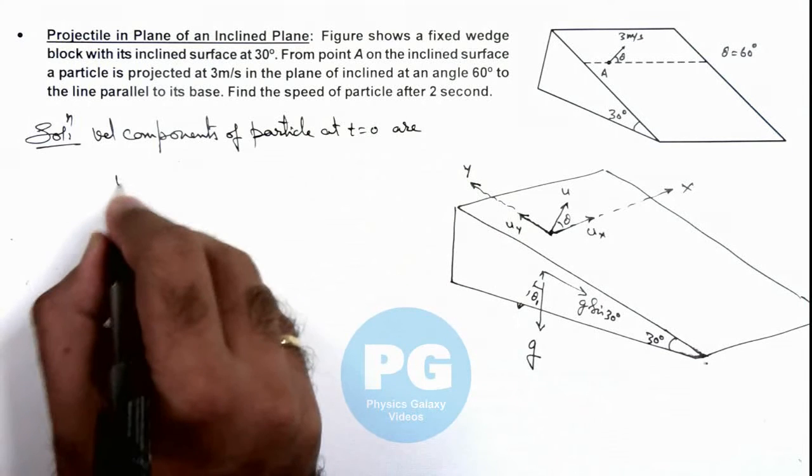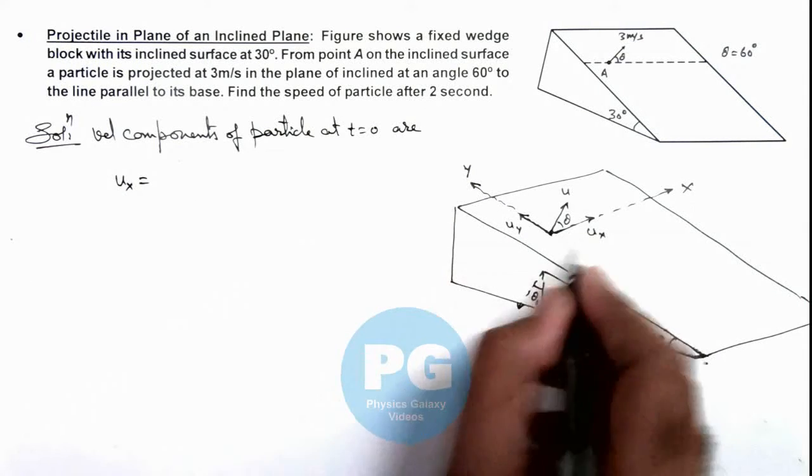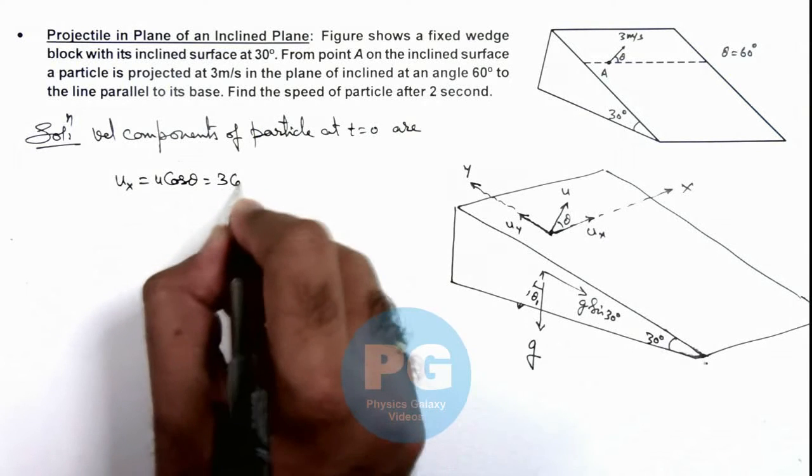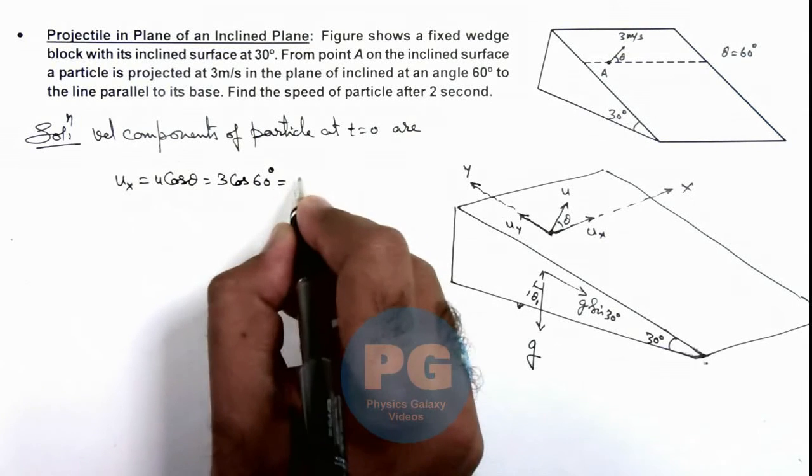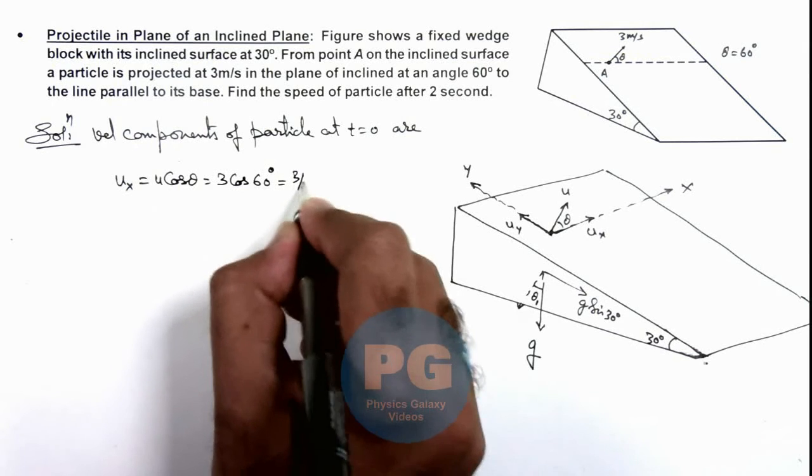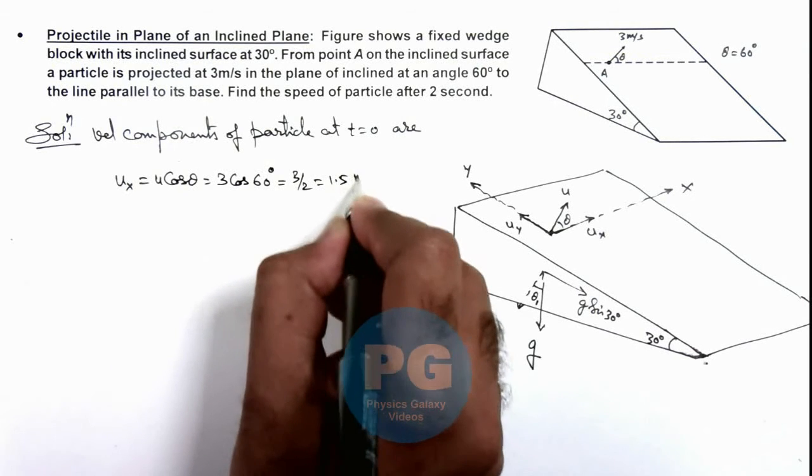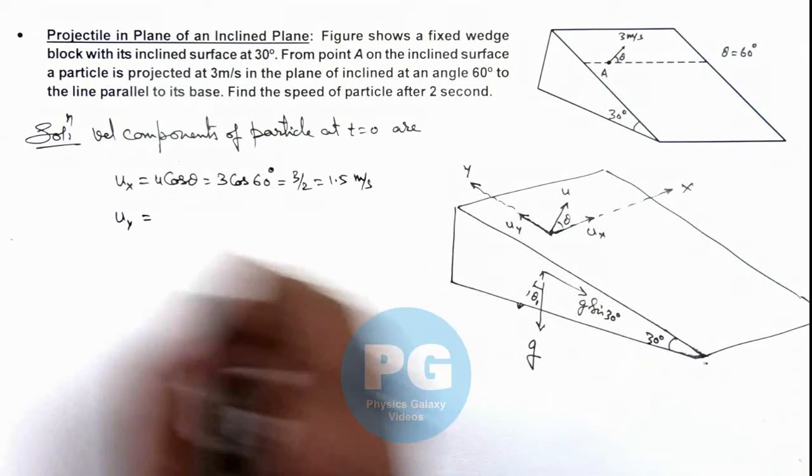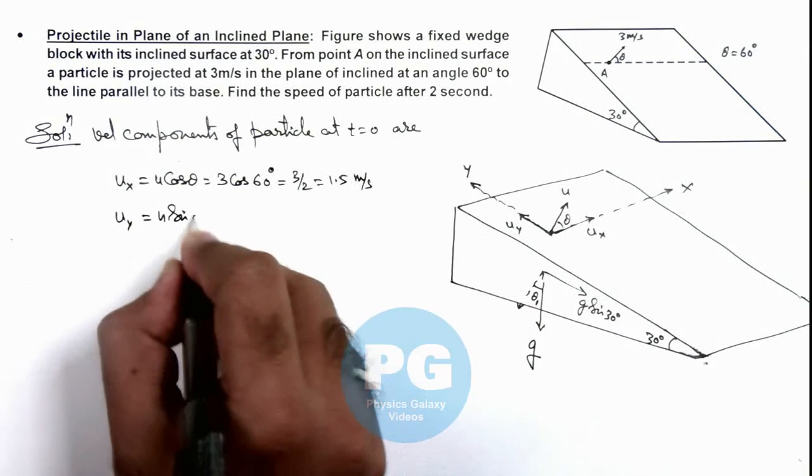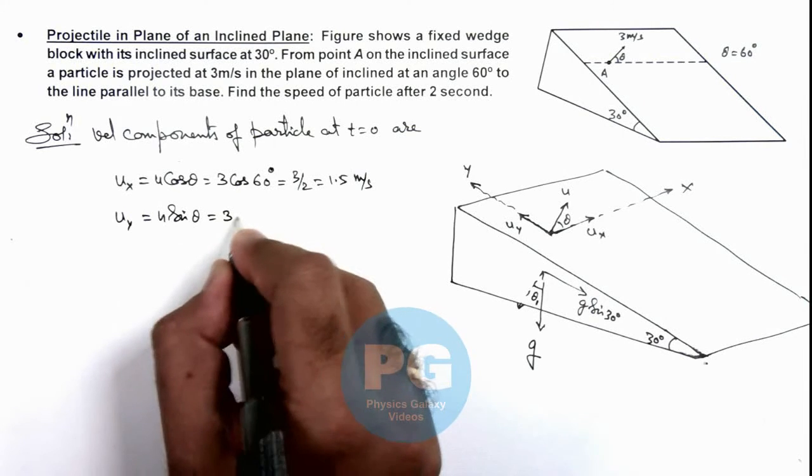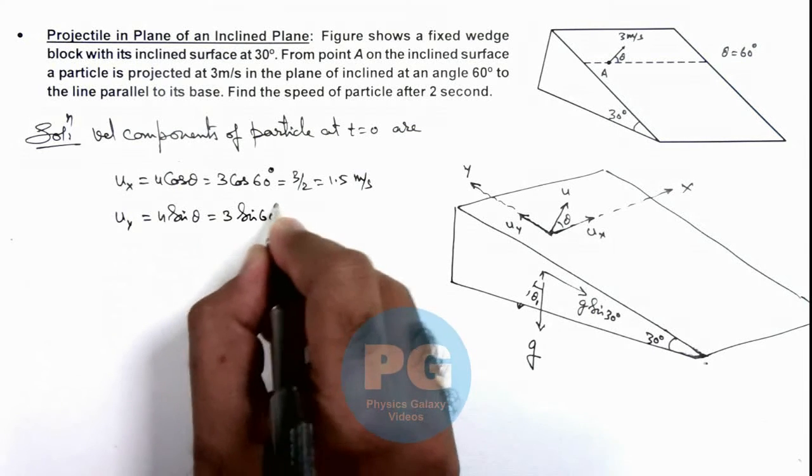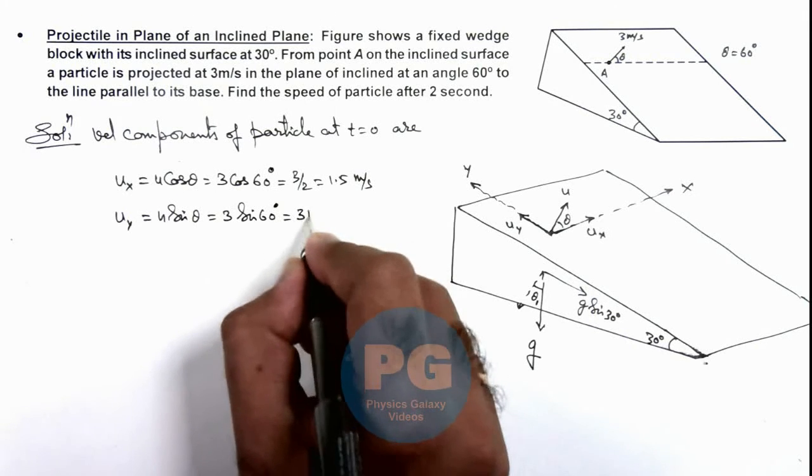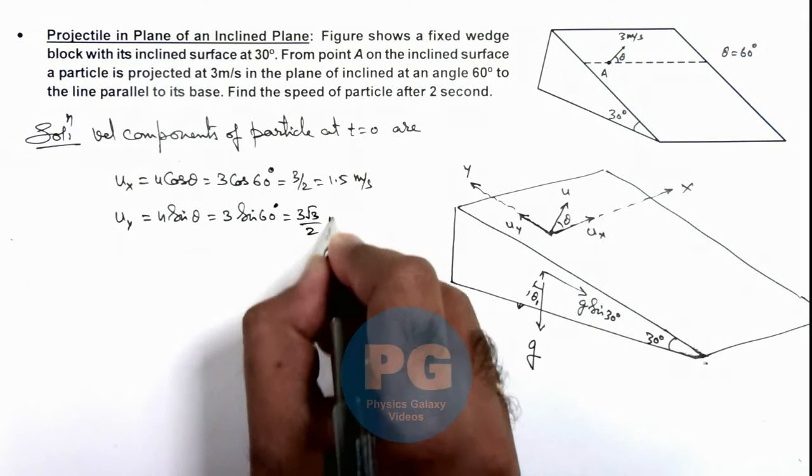At t equal to zero, we can write velocity in x direction is u cos theta, that will be 3 cos 60 degrees, which is 3 by 2 meters per second, that is 1.5 meters per second. If we calculate the velocity in y direction at t equal to zero, this is u sine theta, which is 3 sine 60 degrees, and that is equal to 3 root 3 by 2, so this is 3 root 3 by 2 meters per second.